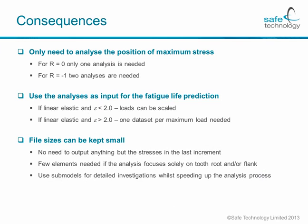What are the consequences of this finding? For one, we will only need to analyze the position of maximum stress. If we have a load ratio of 0, we will need merely one analysis, whereas for R equals minus 1, we would have to make use of two analyses. We can then use the analyses as input for the fatigue life prediction. If we have a linear elastic solution and our overlap ratio is less than 2, we can actually scale the loads up and down. If the overlap ratio is greater than 2, we will still need a couple of solutions but only one data set per maximum load. One benefit is that file sizes can be kept small because there is no need to output anything but the stresses in the very last increment.